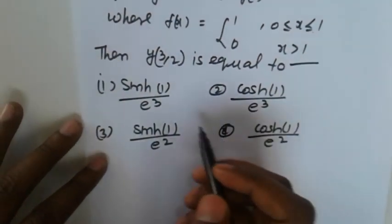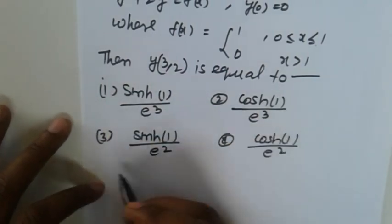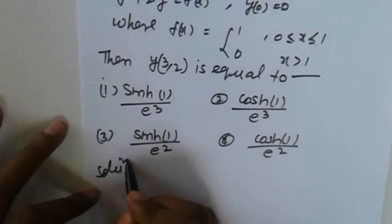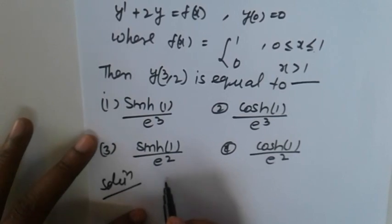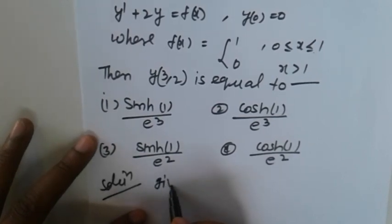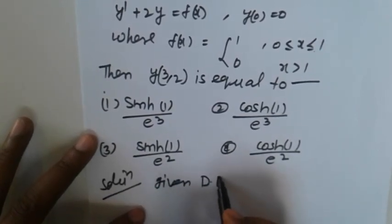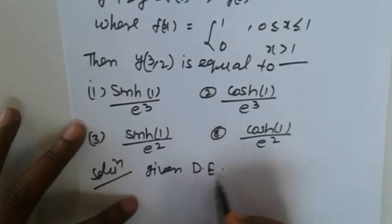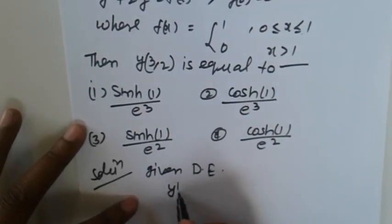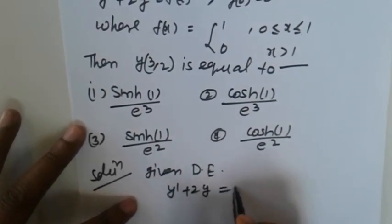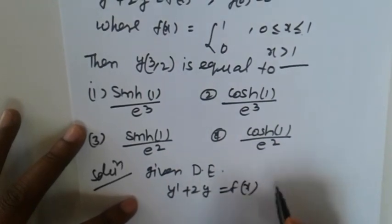Three or four options are given. Now for the solution, first write down the given differential equation. The given differential equation is Y' + 2Y = f(x), this is equation number one.